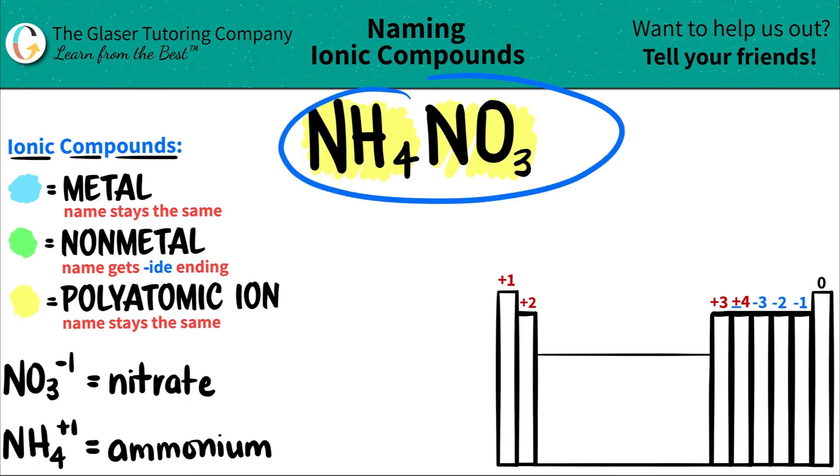This is an ionic compound because the polyatomic ions have charges. And that's what ionic compounds are. It doesn't have to necessarily be a metal and a non-metal.